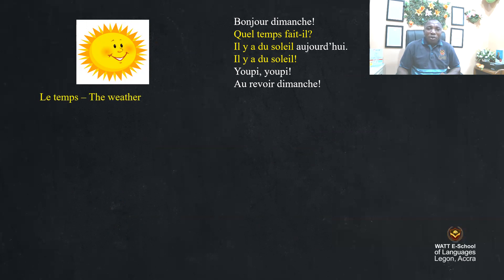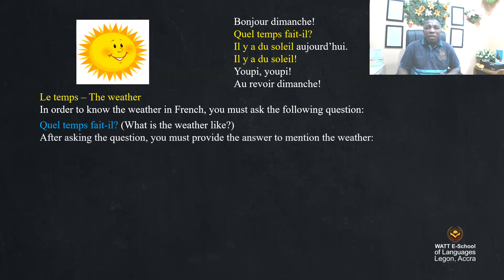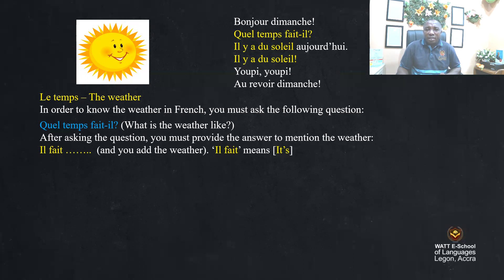Le temps — the weather. The weather in French — how do you express the weather? Through the conversation or statement that we had, let's give you the breakdown. In order to know the weather in French, you must ask the following question: Quel temps fait-il? What is the weather like? After asking the question, you must provide the answer by saying il fait — meaning 'it's'. You can also say il y a.